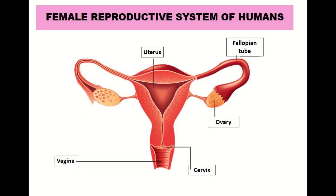Now we proceed with the female reproductive system of humans. I'm sure all of you also have prior knowledge about the female reproductive system since we have discussed this in the lower form. The female reproductive system consists of several parts: the uterus, the right fallopian tube, and the left fallopian tube.